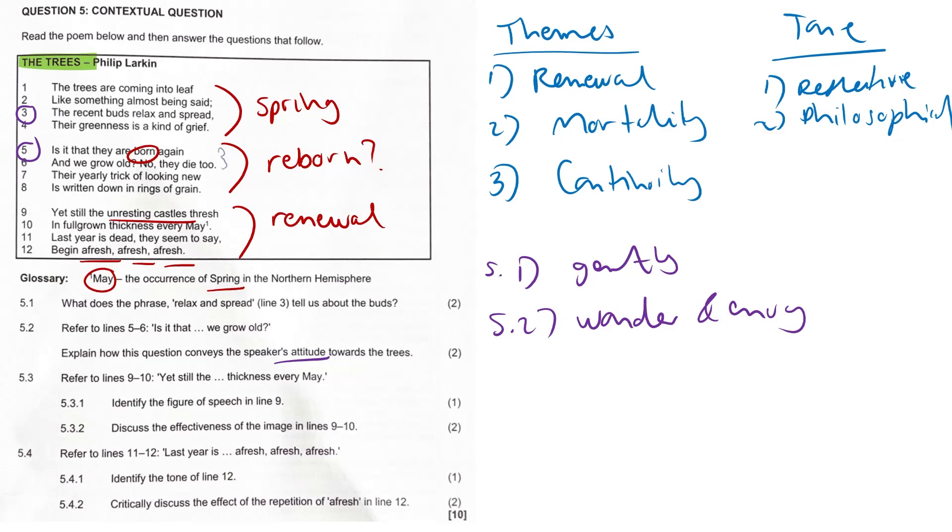5.3.1: Identify the figure of speech in line 9. It is a metaphor. The trees are compared to castles, suggesting their strength, endurance, and grandeur. No like or as was utilized here, so it is a comparison without using like or as. It is going to be a metaphor for sure.